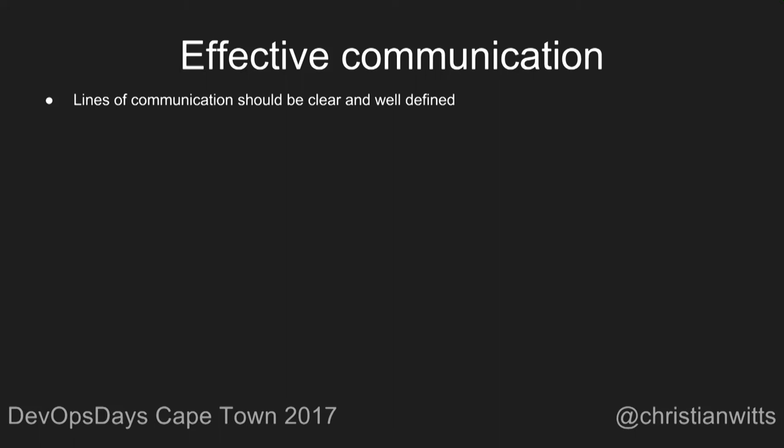We need to communicate effectively both inside and outside the organization. Lines of communication should be clear and well-defined — is your door always open, or do you want someone to check your availability first? Do you have different rules depending on the time of day? If somebody sends you an email at 6pm, are you expected to reply by 7pm or will you take care of it the next day? The communication channel should be succinct and not needlessly cluttered with extraneous information — if you're having a meeting on Slack and someone keeps dropping pug pictures into the channel, that's needlessly distracting; the pugs can wait 30 more minutes.